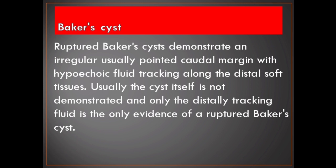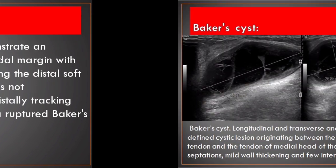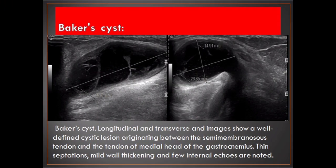Usually the cyst itself is not demonstrated and only the distally tracking fluid is the only evidence of a ruptured Baker's cyst. Longitudinal and transverse images show a well-defined cystic lesion originating between the semimembranosus tendon and the tendon of the medial head of the gastrocnemius. Thin septations, mild wall thickening, and few internal echoes are noted.